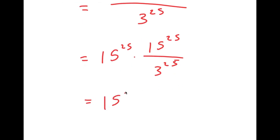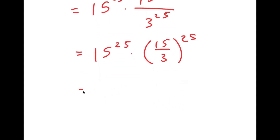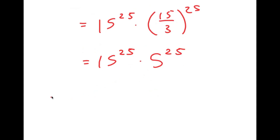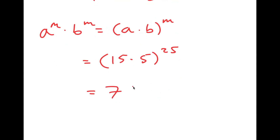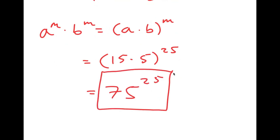This is equal to 15 to the power of 25 times 15 over 3 to the power of 25, which is equal to 15 to the power of 25 times 5 to the power of 25. Now, another property of exponents is that a to the power of m times b to the power of m is equal to a times b to the power of m. So this is going to equal 15 times 5 to the power of 25, which is equal to 75 to the power of 25. So this is my answer.